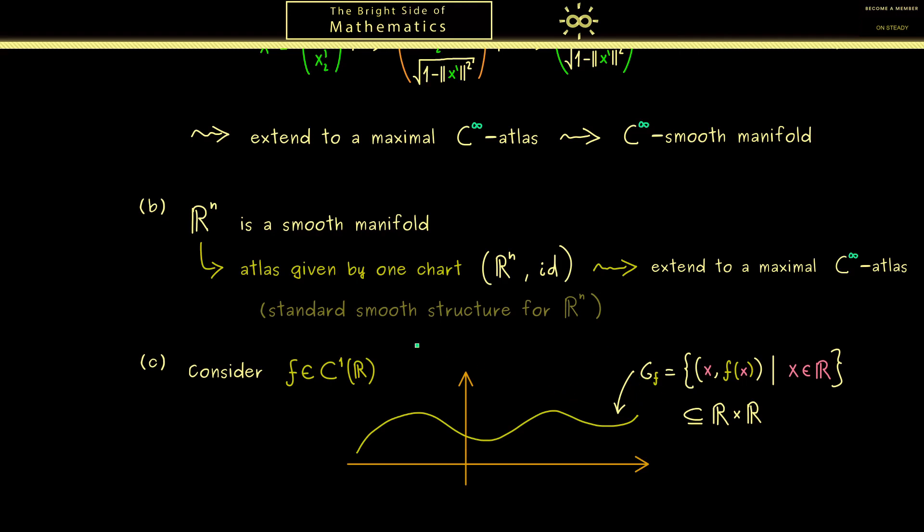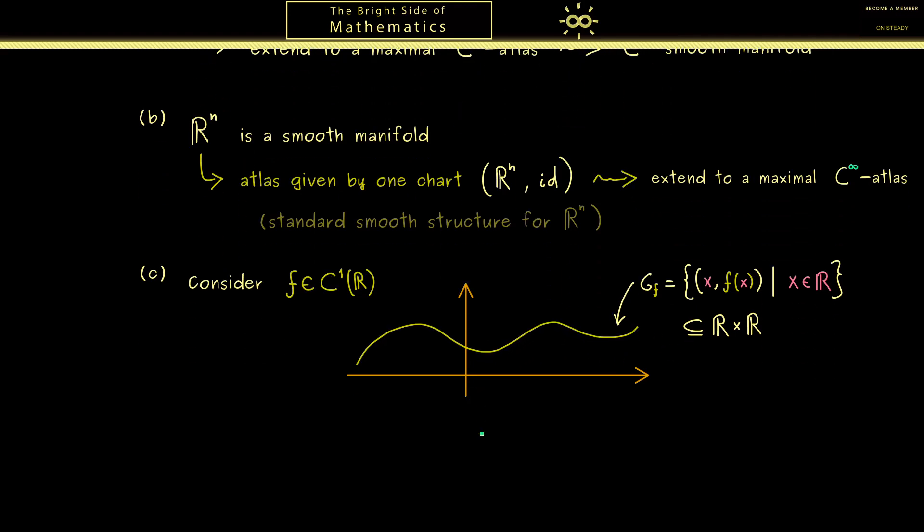In other words, G_f is a subset in R times R. Indeed, all the information of the function is contained in this subset G_f. Moreover, maybe you remember if you do set theory, we use the graph to define the concept of a function. Therefore you should see this whole thing here is a natural concept.